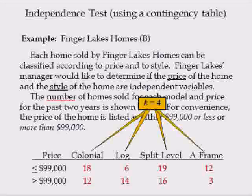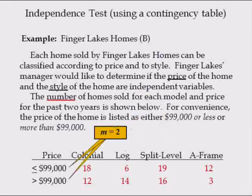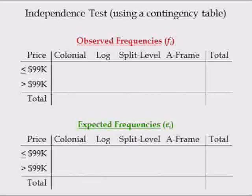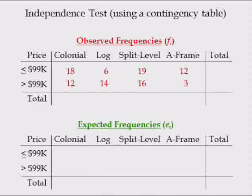Since there are four columns, K equals 4. Since there are two rows, M equals 2. The observed frequencies are 18, 6, 19, 12, 12, 14, 16, and 3.